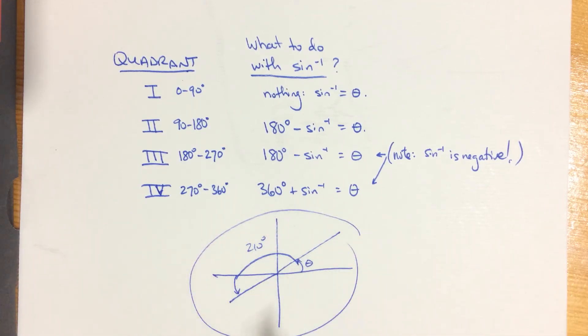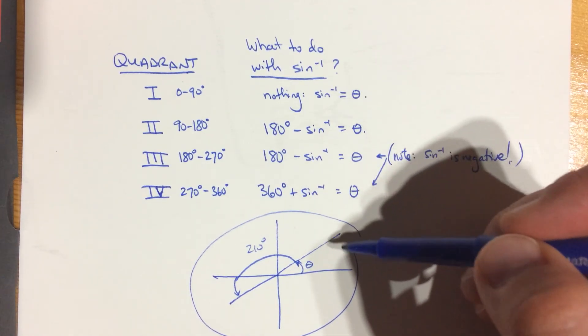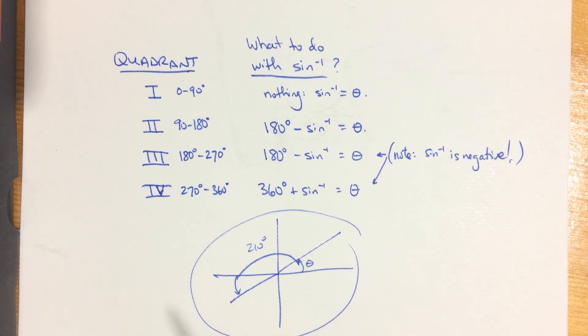So use a picture, visualize it, draw it, and write it down. Learning the rules is okay, but this is your most reliable way using your own brain. Thanks a lot.